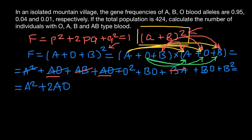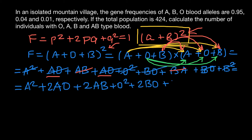Continuing the rearrangement: we have O² appearing once, BO appearing twice giving 2BO, and B² appearing once. So our full expanded formula is A² + 2AO + 2AB + O² + 2BO + B², and all this equals one.